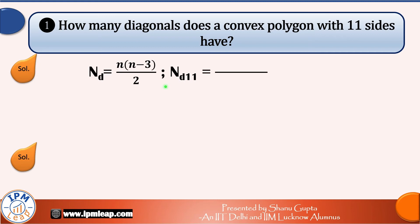So if n is 11, we get 11 into 11 minus 3 divided by 2. That is 11 into 4, 44 diagonals. So a polygon of 11 sides has 44 diagonals.